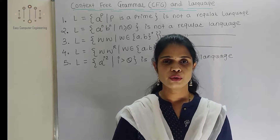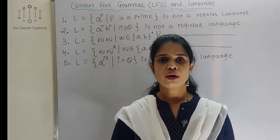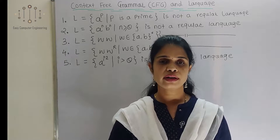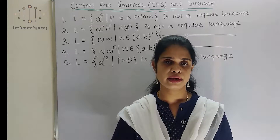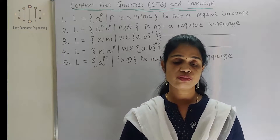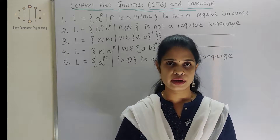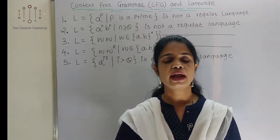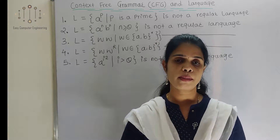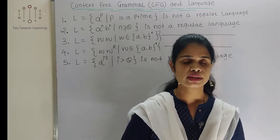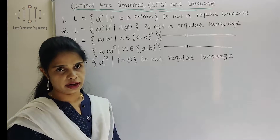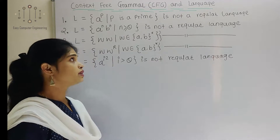Hello friends. In this video we will see context-free grammar and the languages. In previous lectures, we already covered finite automata and regular expressions in detail. There are many languages which we cannot represent with the help of finite automata, as finite automata does not have its own memory. That is the main drawback of finite automata. So these are some examples which we cannot represent with the help of finite automata or regular expressions.